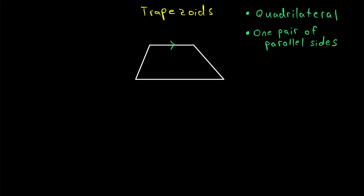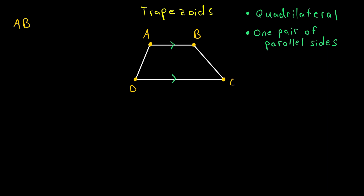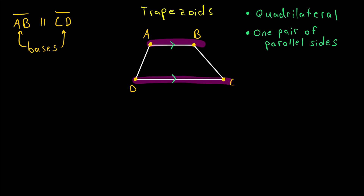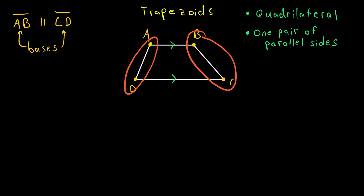In this trapezoid, for example, these two sides are parallel. Let's go ahead and label the vertices of this trapezoid to help us talk about it. We see that side AB of the trapezoid is parallel to side CD. The pair of parallel sides in a trapezoid are called the bases of the trapezoid. The other two sides, in this case AD and BC, are called the legs of the trapezoid.